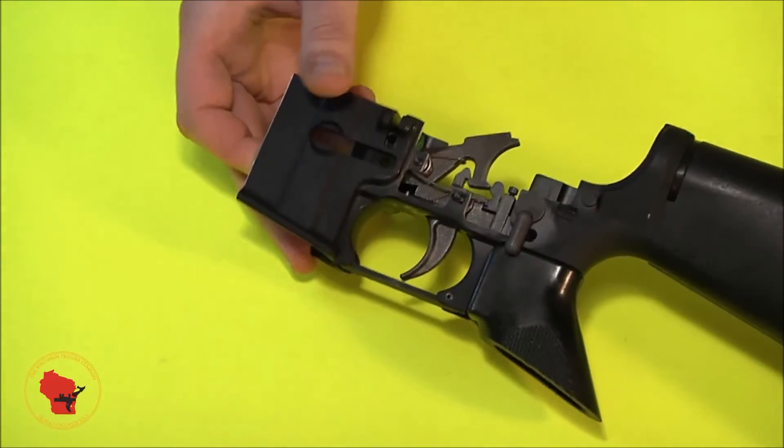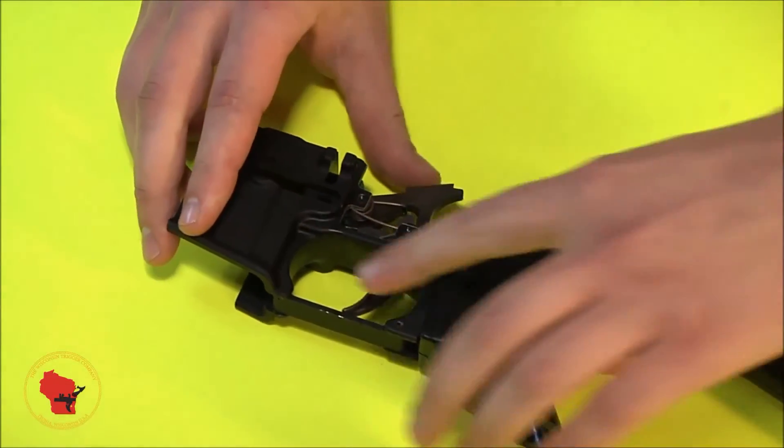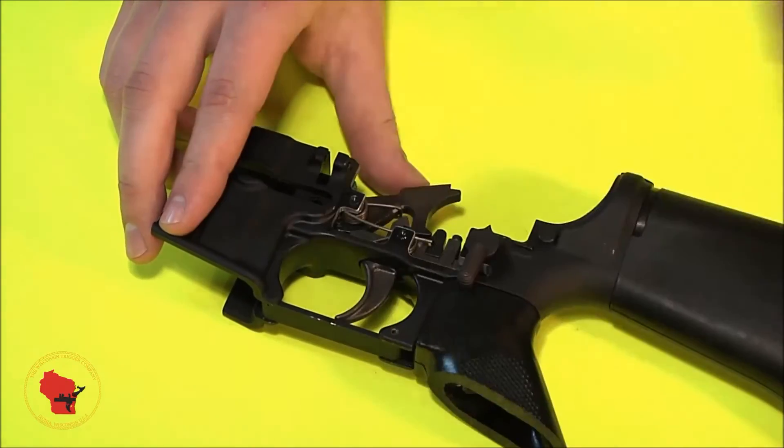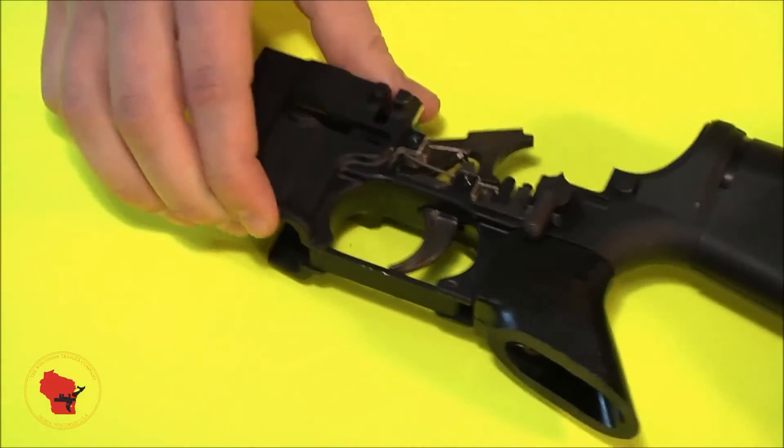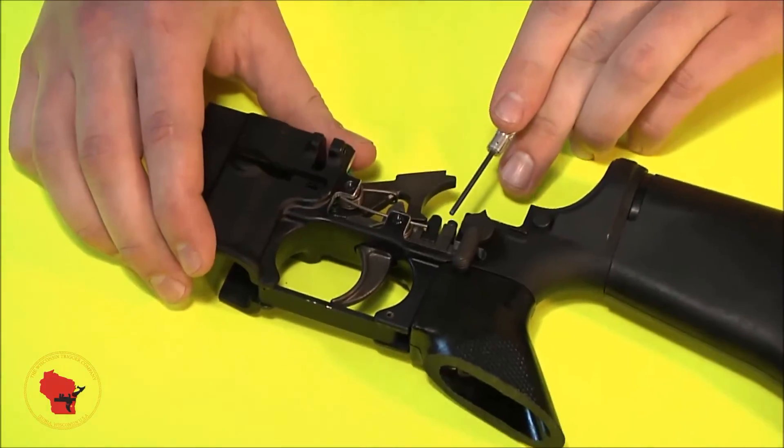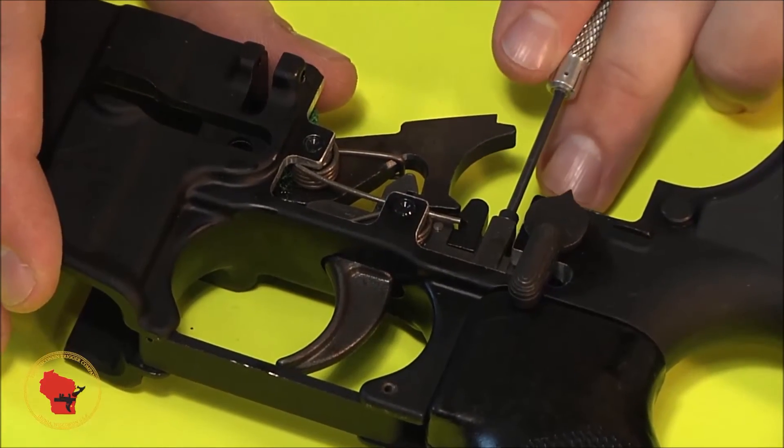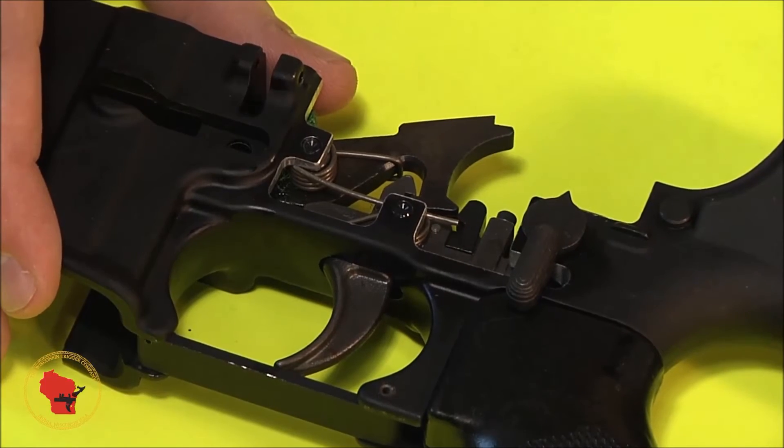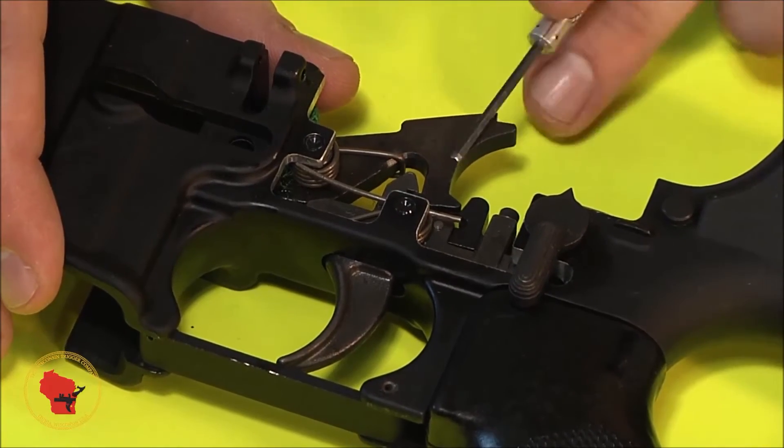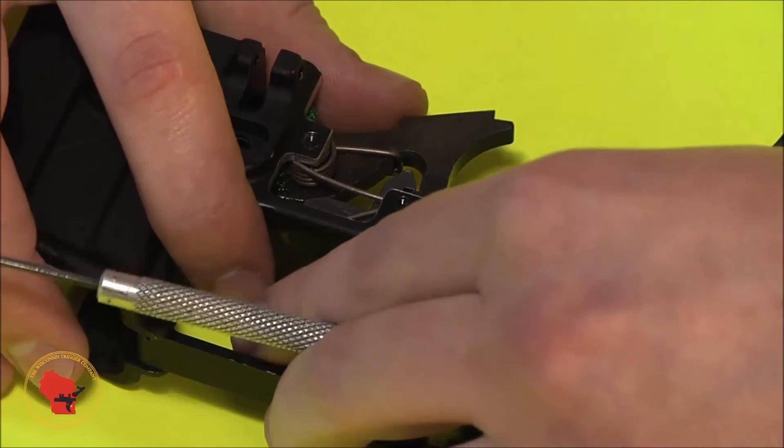So this is our demonstration cutaway model. And it shows you all the internals and stuff here. You may have seen it in the first video when I had it out. Anyways, this next step is going to be concerning this screw right here, the disconnector screw. We're going to be locating the zero point. And what that is, is the exact point at which this trigger loses its second stage.